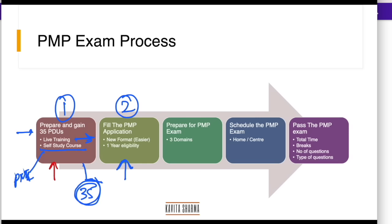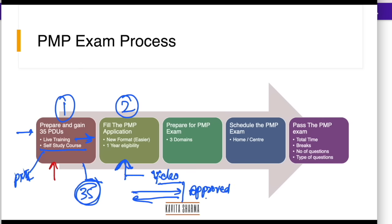Once you fill in the application, it goes through certain rounds of review by PMI with some questions, and finally your PMP application is approved. Once the application is in the approved status, you have one year to prepare and sit for the exam. You can sit for the exam three times if you fail, but the thought of failing should not be in your mind — you should sit to pass the exam.